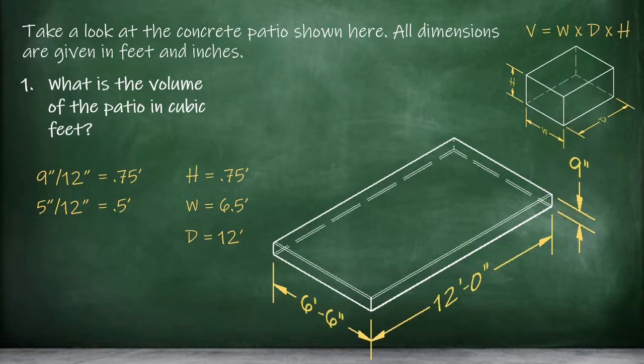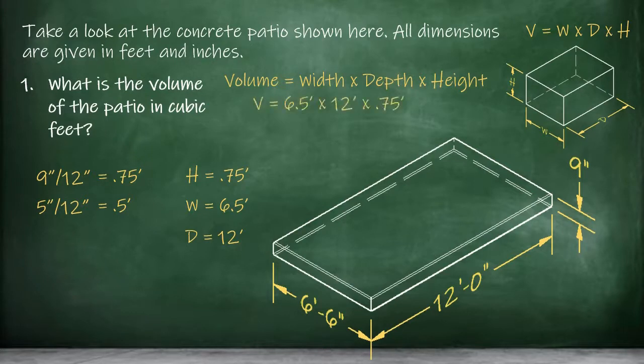With these dimensions all in the same units of measurement, now we can find the volume. The volume formula for a rectangular solid is width times depth times height. 6.5 feet times 12 feet times .75 feet equals 58.5 cubic feet for the total volume of concrete needed to build the patio.